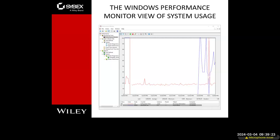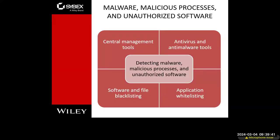If you think you have a virus or malware on your system, this would be the first thing to look at — look at the processes taking up all your CPU or RAM, or large files that might be eating up your disk space. Malware, malicious processes, and unauthorized software can cause many different problems. In detecting malware and malicious processes, we can use antivirus, central management tools, software and file blacklisting, and application whitelisting. These can be done on system or off system.